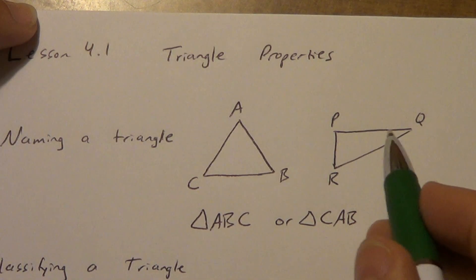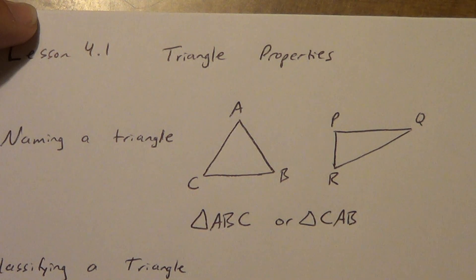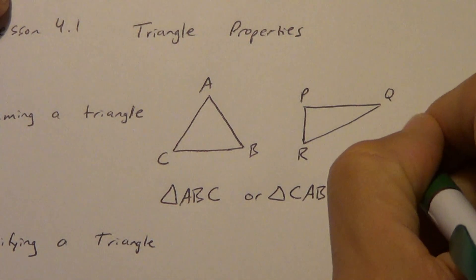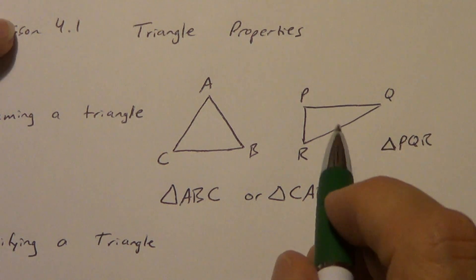Or I could call it triangle CAB. Okay, this one over here, even though the triangle is shaped differently, we still use this exact same symbol for any triangle. We don't change the symbol just because the triangle looks a little bit different. So this could be PQR, triangle PQR. It could be triangle QRP.